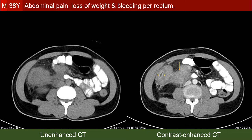We see marked extension of the lesion along the medial aspect of the colon into the retroperitoneum, and the right ureter is no longer identified. It seems that this lesion is responsible for the compromise of the right ureter and the obstruction of the right kidney.